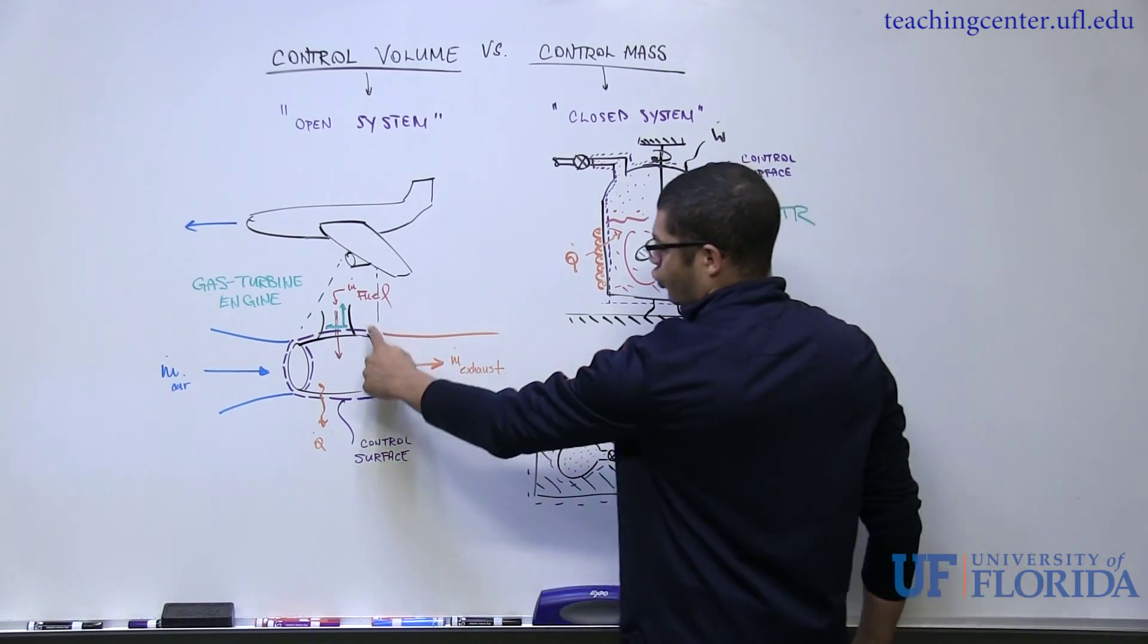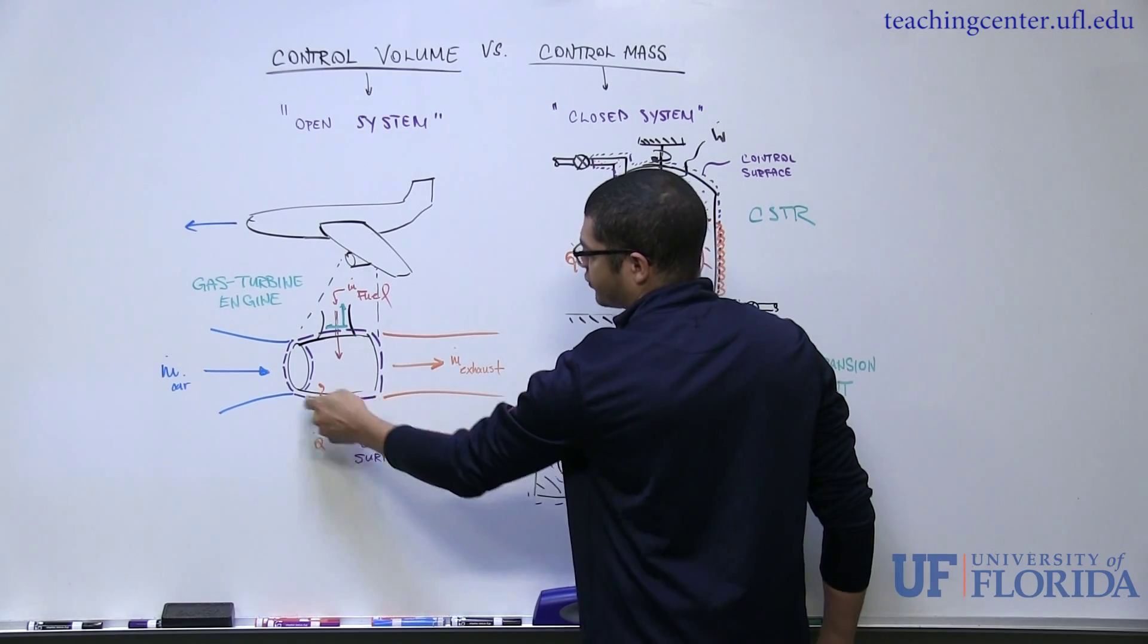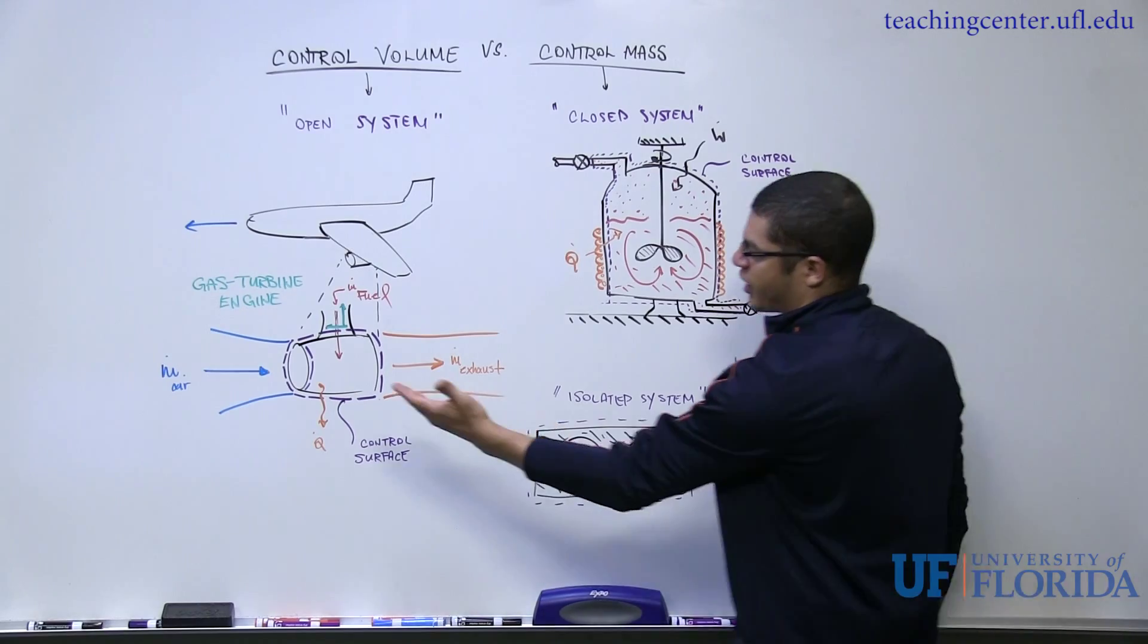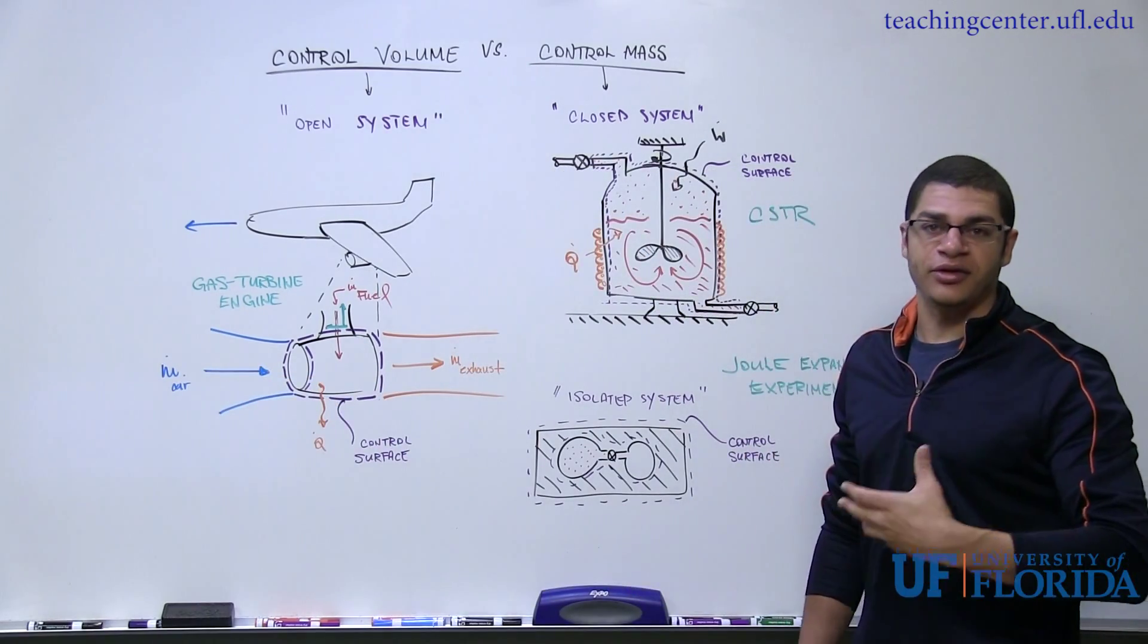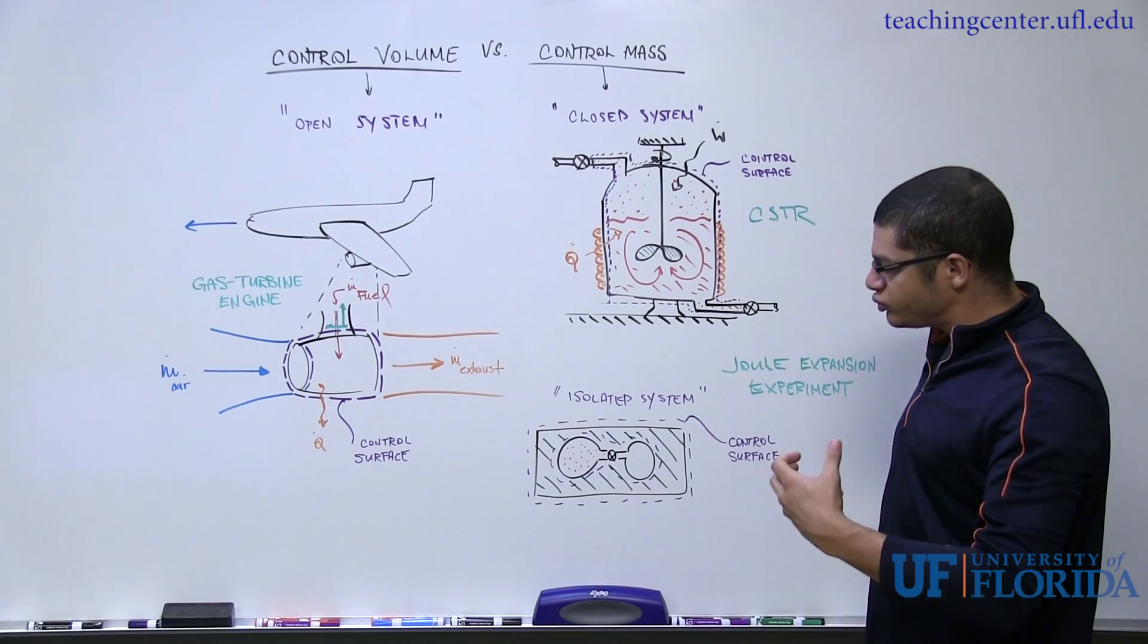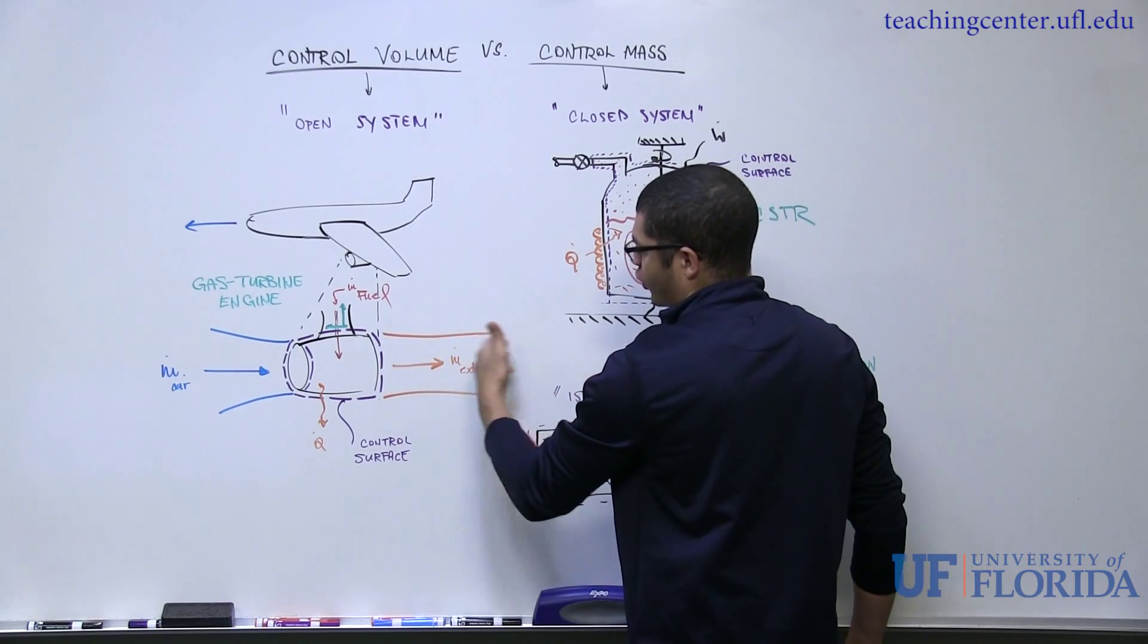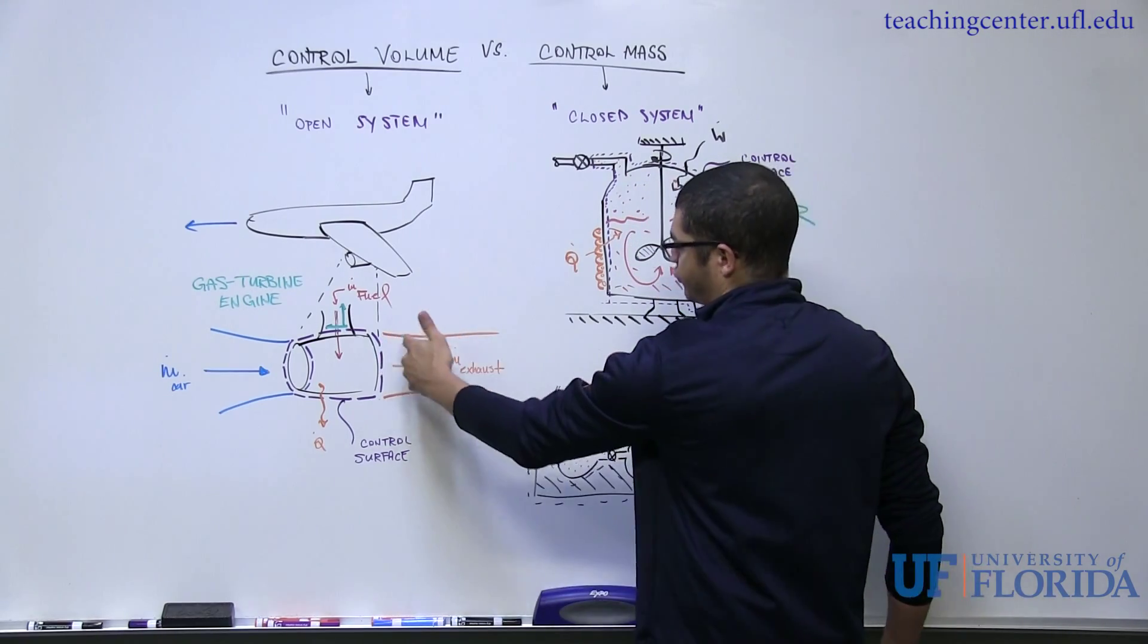So I've drawn my control surface intersecting the inlet and outlet planes of the engine, and then just kind of following the cowl of the engine. Initially, we have a flux of air into the engine. So this is a mass flux which actually carries energy with it. Coming out of the engine, we have an exhaust flow. So this is another flux of mass and energy as well.